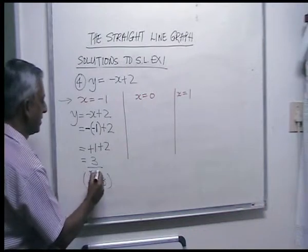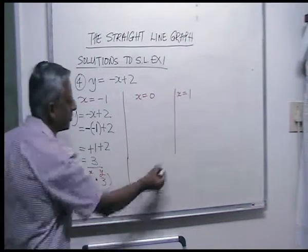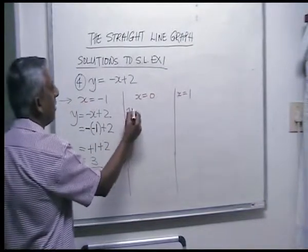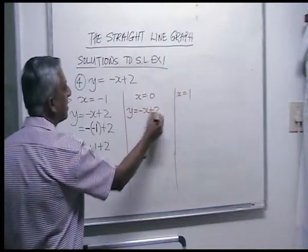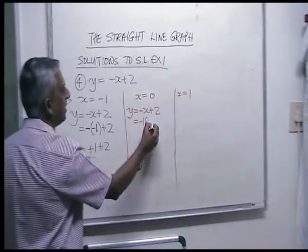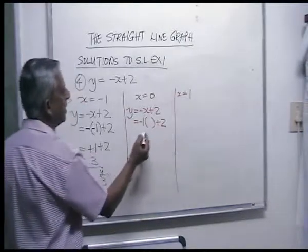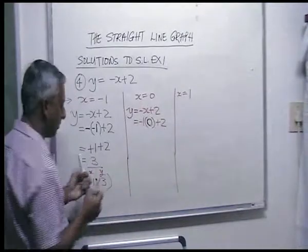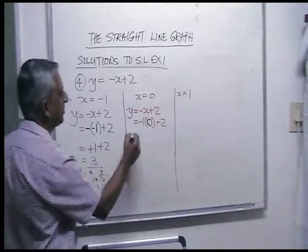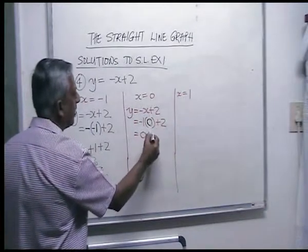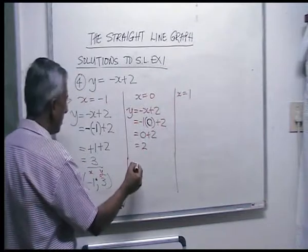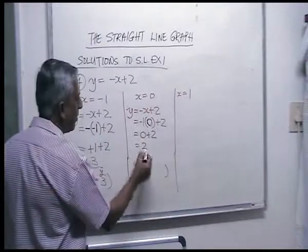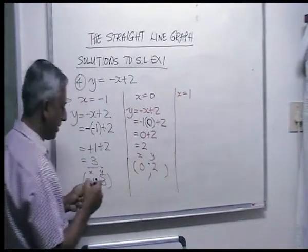For x is zero: y is equal to minus one times zero, which is zero, plus two. Zero plus two is two. So the ordered pair is x is zero, y is two.